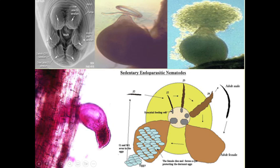In this slide you can have a look at the real-time pictures of these sedentary nematodes. This is a cyst nematode which belongs to Heterodera or Globodera species, and these two pictures are the real-time pictures of the J4 stages of root-knot nematodes, the Meloidogyne species. In this picture you can have a look at the life cycle of this root-knot nematode.